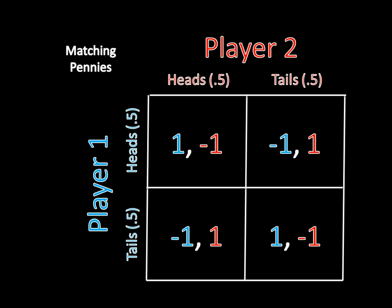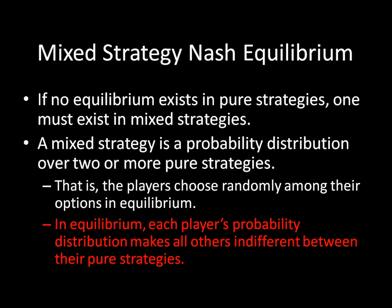And if both players flip their coins, each player is indifferent between his pure strategies. That is, if Player 1 is flipping, Player 2 expects to win half the time and lose half the time regardless of whether she chooses heads or tails. Likewise, if Player 2 is flipping, Player 1 expects to win half the time and lose half the time regardless of whether he chooses heads or tails. That meets our requirement, as you see in red, and thus we have found our mixed strategy Nash Equilibrium for matching pennies.